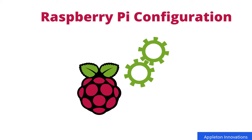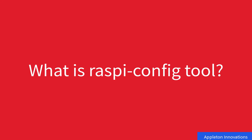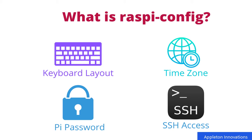Welcome to the lesson on Raspberry Pi configuration. We are going to use raspi-config, which is a configuration tool in Raspbian. With this tool, you can configure various settings of your Raspberry Pi installation, such as changing the keyboard layout, time zone, password, and access to SSH, VNC, and other peripherals. You can run it directly in the command line or use the Raspberry Pi configuration GUI tool.